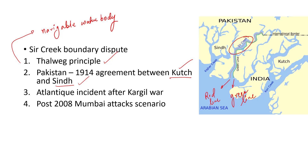Why exactly do both sides want control over Sir Creek? It is believed that the Sir Creek area has both fish resources as well as energy resources. That is why both sides have been trying to ensure they get the maximum area under them. Because of this unsettled dispute, neither side has been able to explore the resources from this water body.